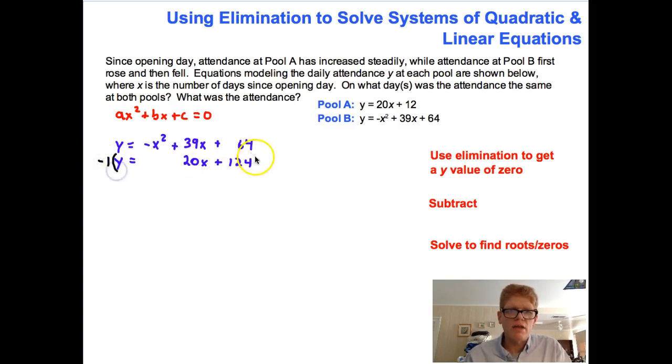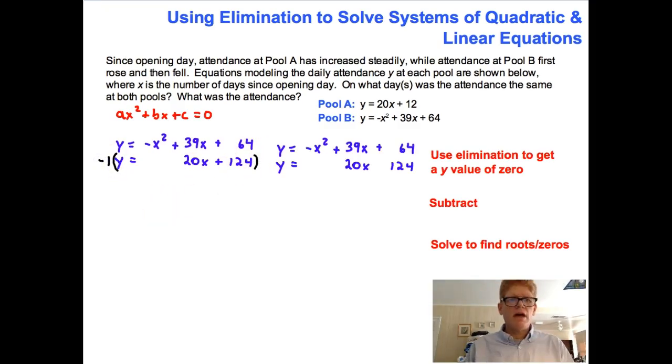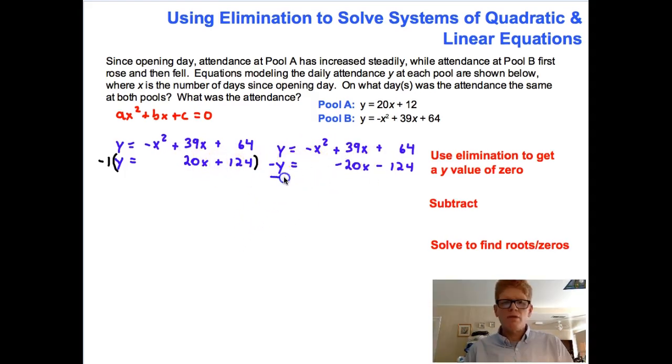We'll multiply through by a negative one down here on the bottom. That will give us the following. We will have a negative y, and then our 20x will become a negative 20x, and our positive 124 will become a negative 124. And then what we'll do is we'll just add those together. So y plus negative y gives us zero, which is exactly what we want right there. Negative x² plus nothing is going to give us negative x², so imagine that zero being there. 39 minus 20 will give us positive 19x. And then 64 minus 124 will give us a negative 60.